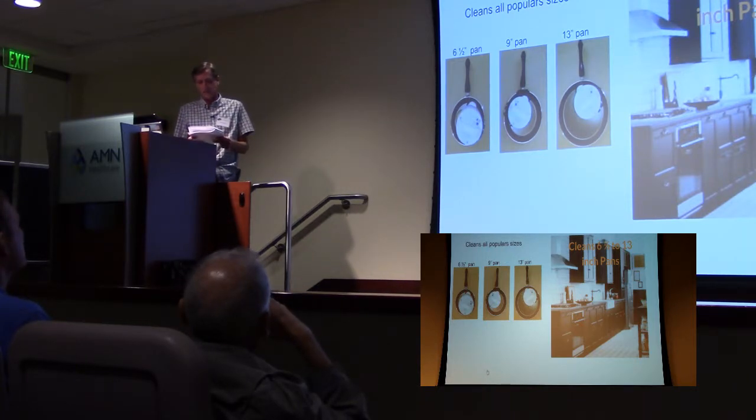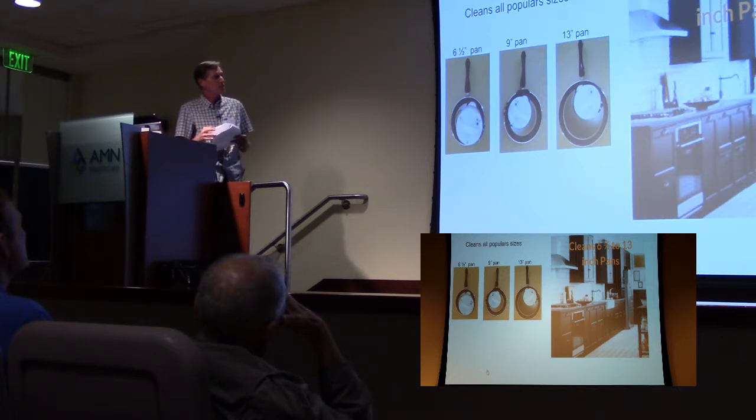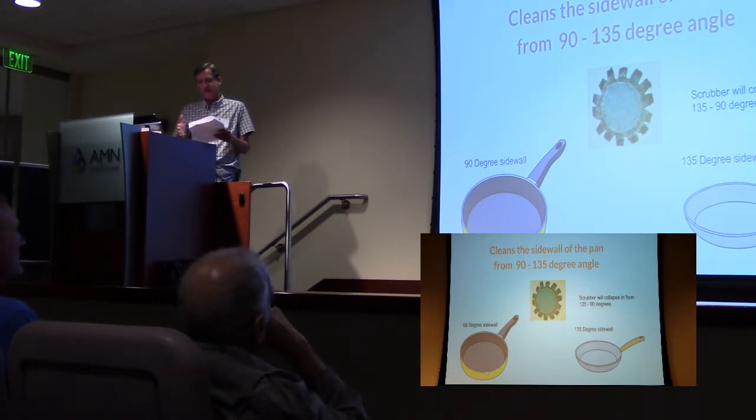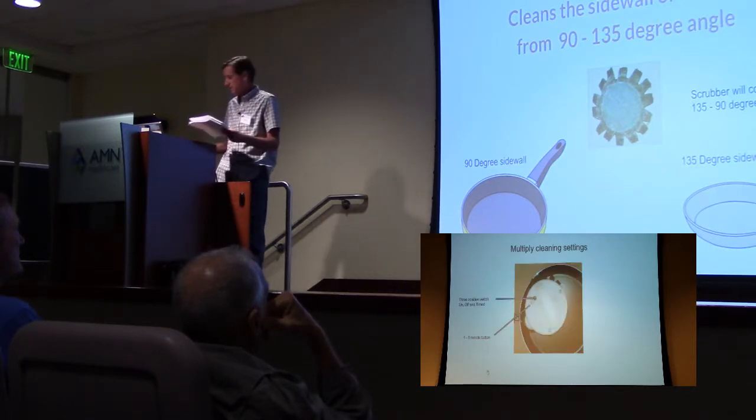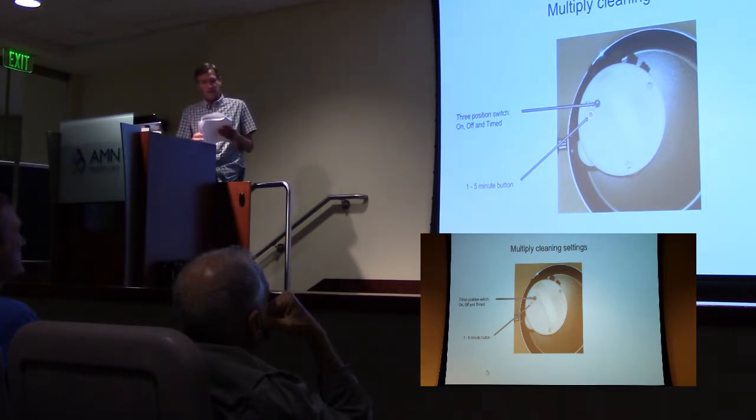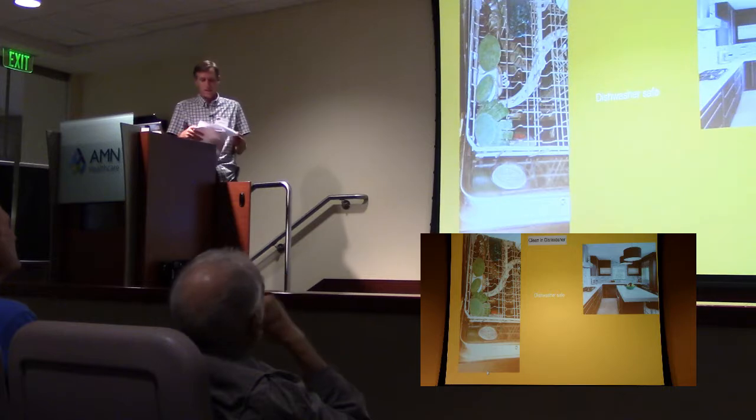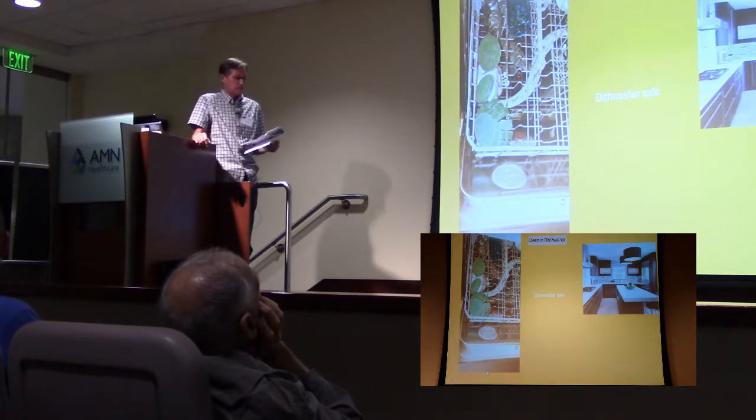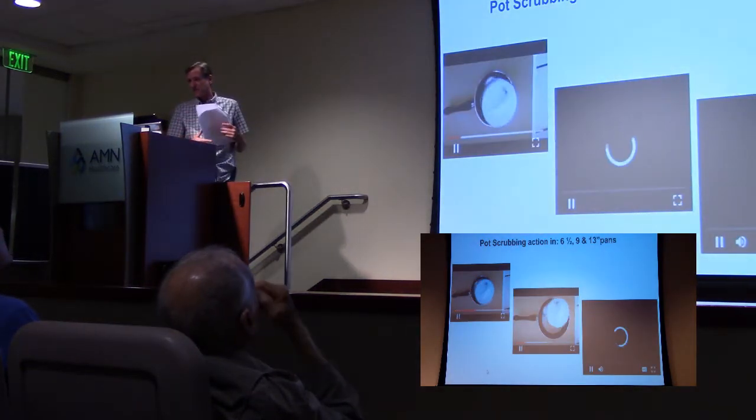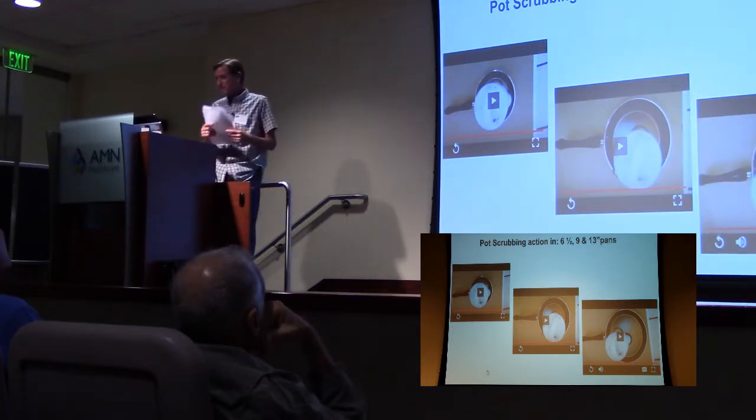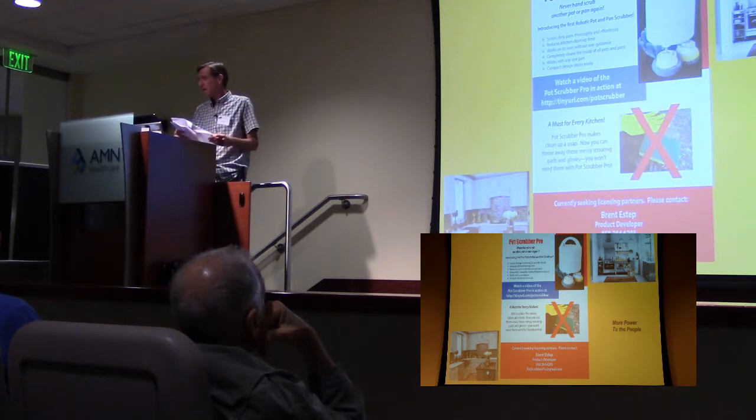The pot scrubber cleans all the popular pan sizes from 6 1/2 to 13 inches and all the sizes in between there. The sidewall scrubber can collapse from 90 degrees to 135 degrees, so it cleans any pan that's straight up or out like this. There's a three position switch: on, off, and timed. The time setting can be adjusted to one to five minutes. These scrubbers, when they're dirty, can be put in the dishwasher to be cleaned. And here's a little demonstration of three different size pans. They're 6 1/2, 9, and 13 inches. Shows you how to clean them all. It's the exact dimensions to clean all the typical side pans.